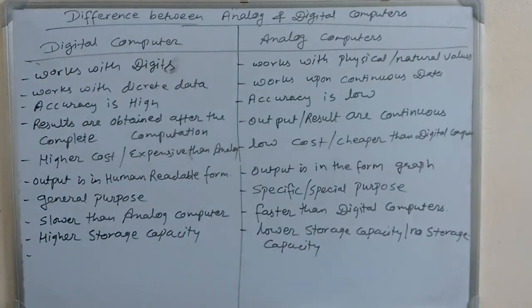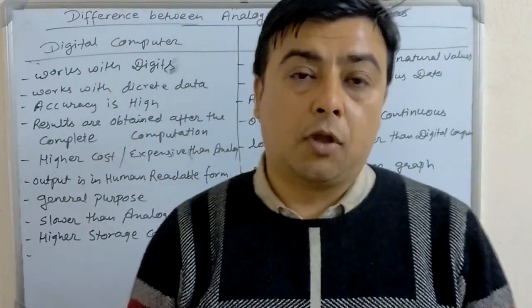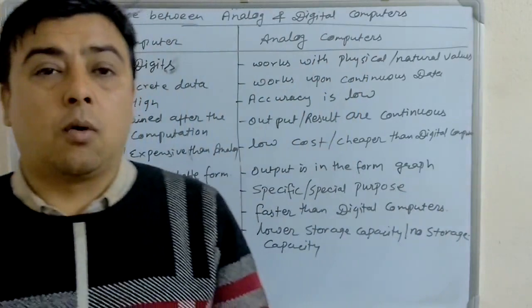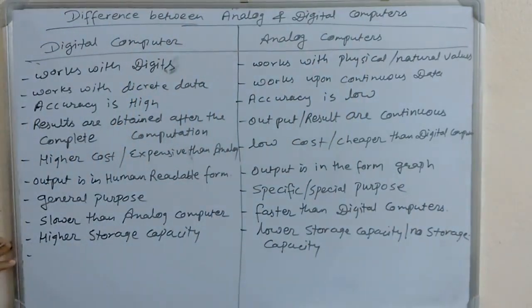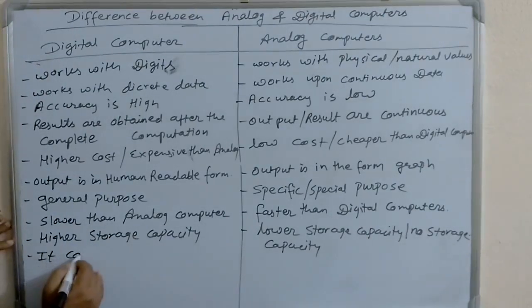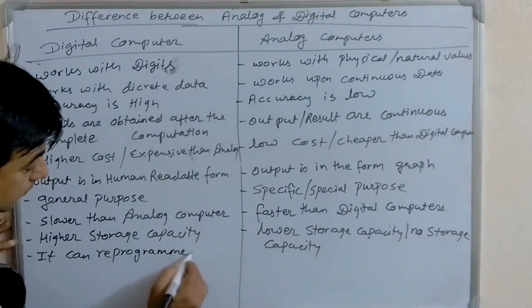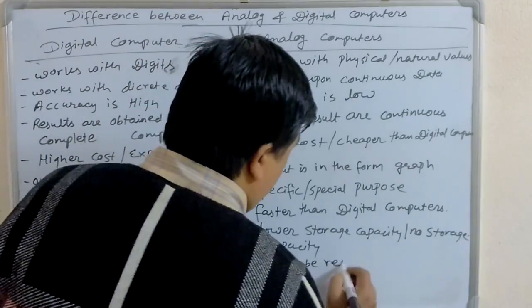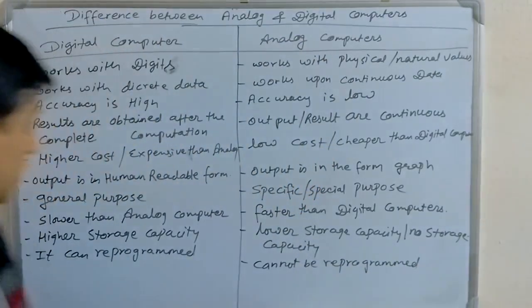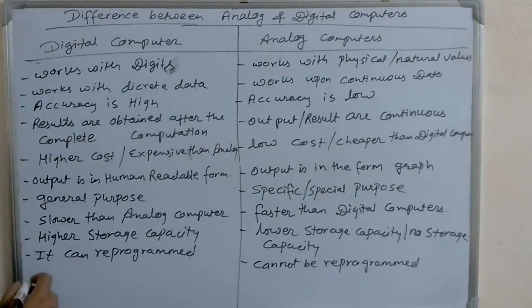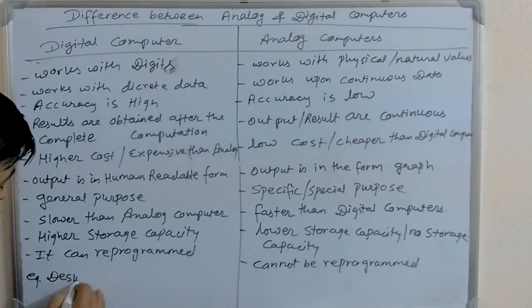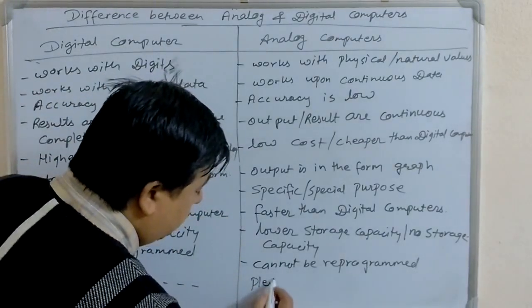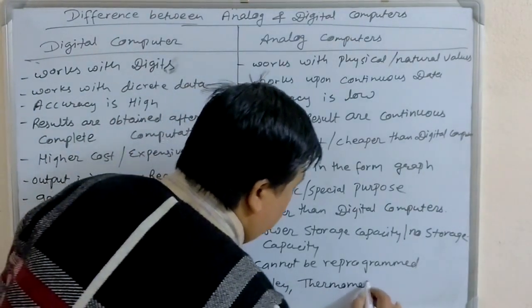In digital computers, programs can be reprogrammed because they can be stored in secondary memory. But in analog computers, programs cannot be reprogrammed. Examples of digital computers include desktop computers and laptops. Examples of analog computers include the thermometer.